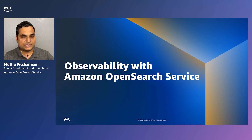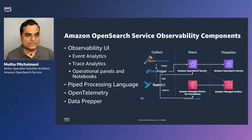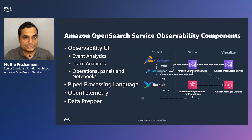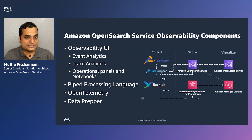Now I'll give you a quick introduction into the components in Amazon OpenSearch Service that help you collect observability data and gain insight from them. The first is what we call the observability UI. This UI has different things like event analytics and trace analytics. Event analytics is a UI that allows you to interactively look at your logs and trace information using what is called a piped processing language. Trace analytics is a UI that helps you visually inspect and interact with traces collected from different parts of the system and helps you zero in on an issue very quickly.